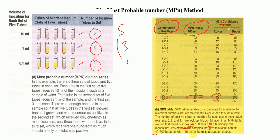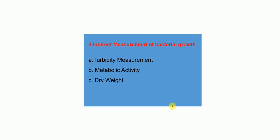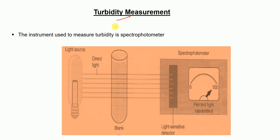Now I am going to talk about indirect measurement of bacterial growth. In this method, we do not directly count the number of bacteria. Rather, we rely on other parameters such as turbidity, metabolic activity, and dry weight to determine the number of bacteria. The turbidity measurement instrument used to measure turbidity is called a spectrophotometer.